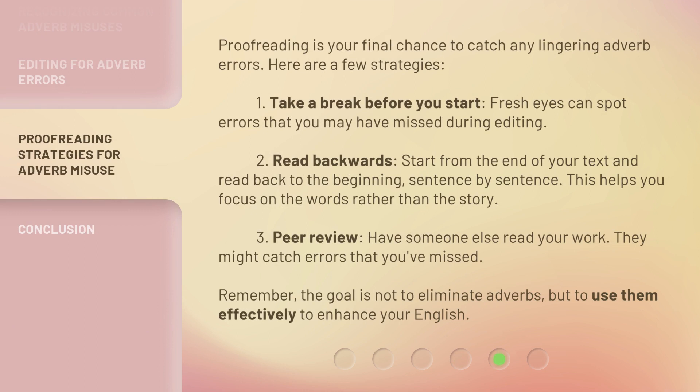Proofreading is your final chance to catch any lingering adverb errors. Here are a few strategies. First, take a break before you start — fresh eyes can spot errors that you may have missed during editing. Second, read backwards: start from the end of your text and read back to the beginning, sentence by sentence. This helps you focus on the words rather than the story. Third, peer review: have someone else read your work, as they might catch errors that you've missed.